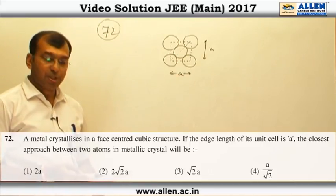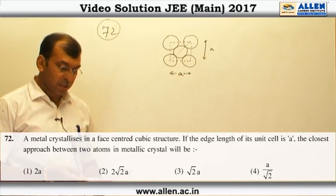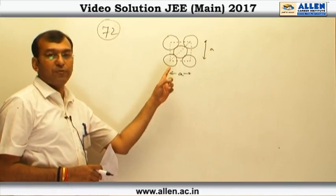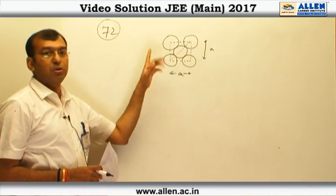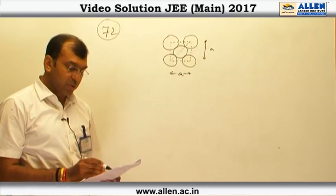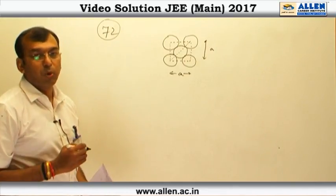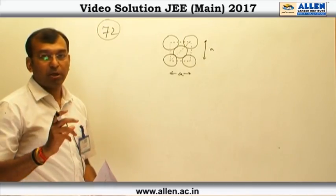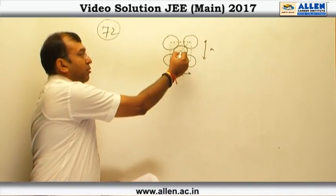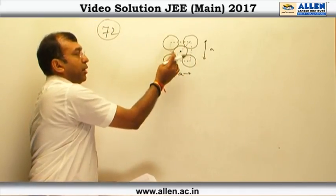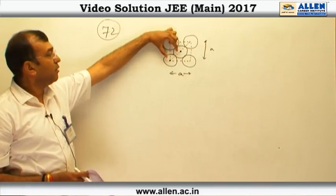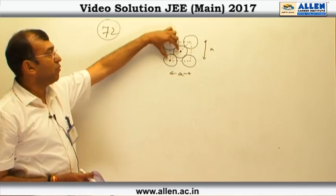A metal crystallizes in a face-centered cubic structure. If the edge length of its unit cell is A, I have drawn one face of the FCC unit cell with edge length A. The question asks for the closest approach between 2 atoms in the metallic crystal. Closest approach means the atoms that are touching each other. You need to calculate the distance between those touching atoms in terms of edge length A.